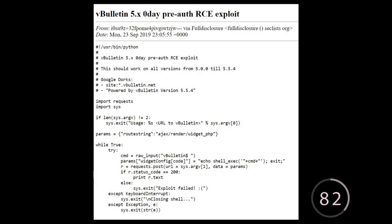vBulletin is one of the most popular web forum software packages on the market. And on September 23rd, an anonymous bug hunter dropped an 18-line Python script to the full disclosure mailing list. With that script, attackers can remotely execute commands on a target server with no authentication.